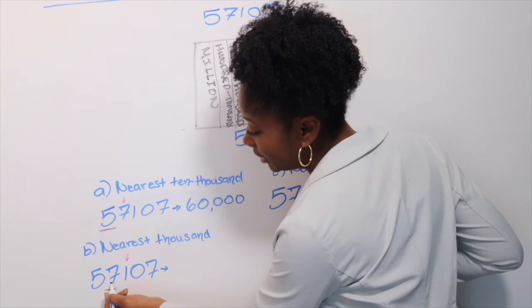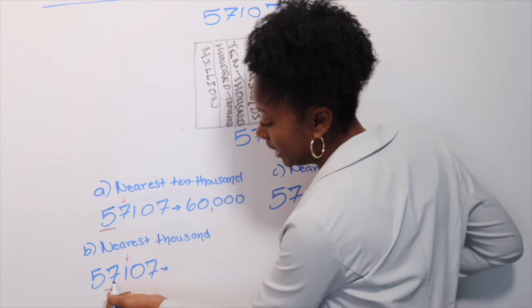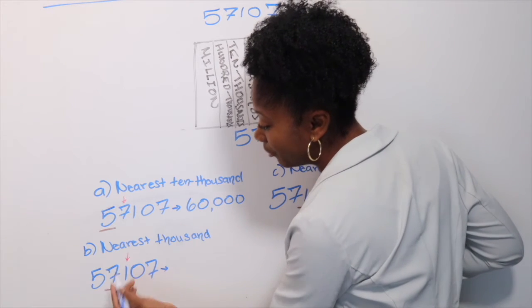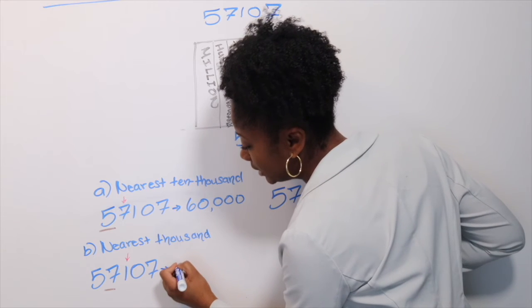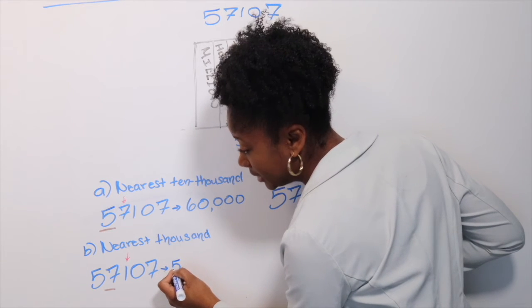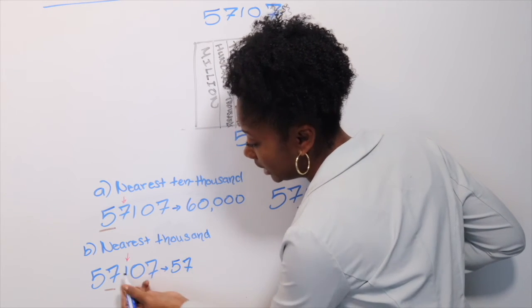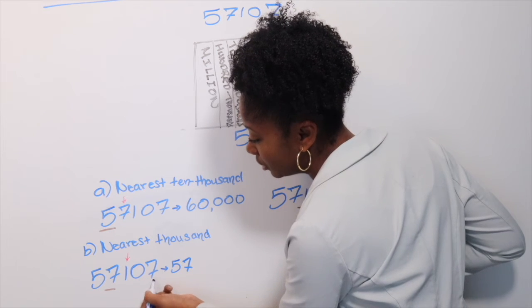The 1 is going to decide if the 7 is going to go up or stay the same because the 1 is lower than 5. This 1 is going to tell the 7 to stay the same. So the 5 stays the same, the 7 stays the same. This turns to 0, turns to 0, turns to 0.